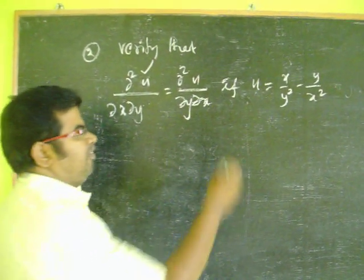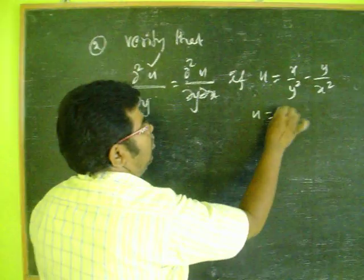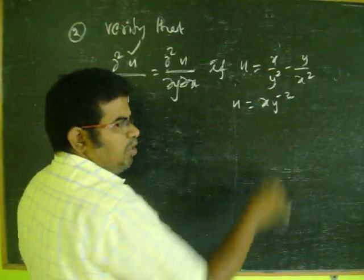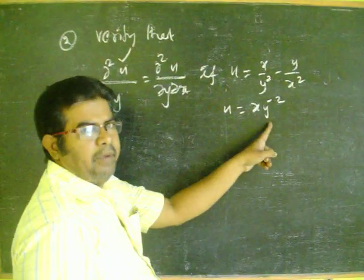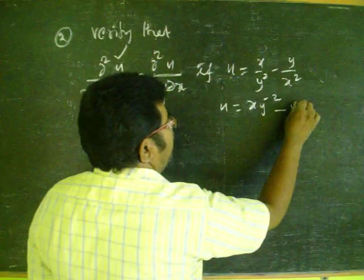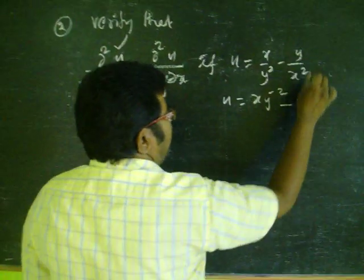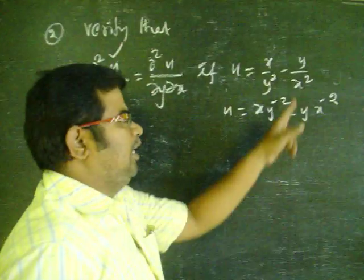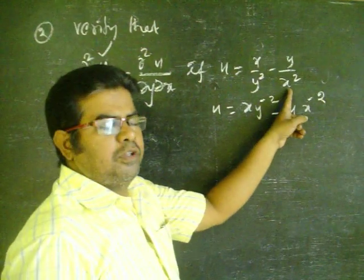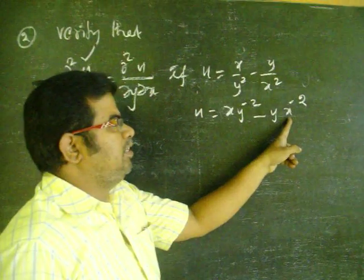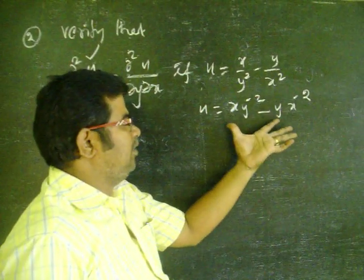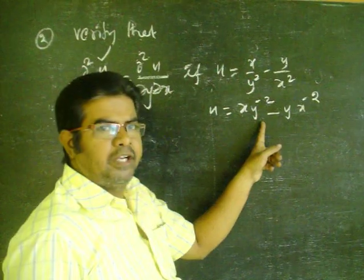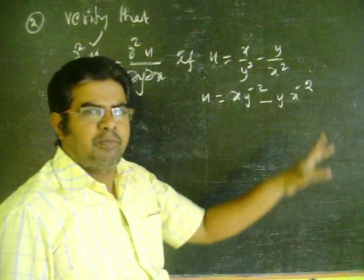First, we rewrite the function. u is equal to x·y⁻² minus y·x⁻², since 1/y² can be written as y⁻² and 1/x² can be written as x⁻². So the function is u = x·y⁻² minus y·x⁻².